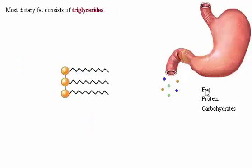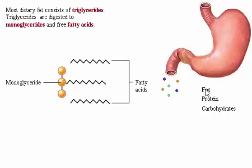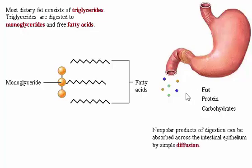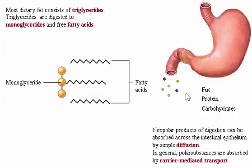Most dietary fat consists of triglycerides. Triglycerides are digested to monoglycerides and free fatty acids. In our representative triglyceride, the three circles represent the carbons of the glycerol backbone and the picket fences represent fatty acids. Nonpolar products of digestion can be absorbed across the intestinal epithelium by simple diffusion, a passive process. In general, polar substances are absorbed by carrier-mediated transport, which may be active — requiring the energy of ATP — or passive, relying on the concentration gradient of the substance being absorbed.